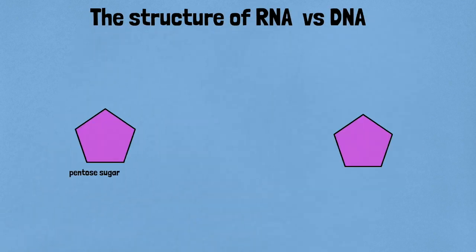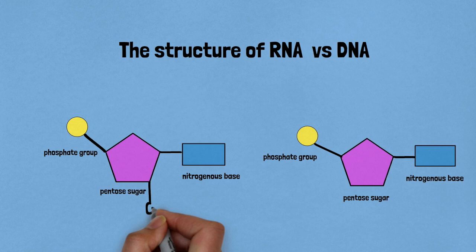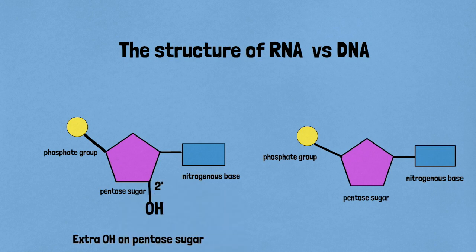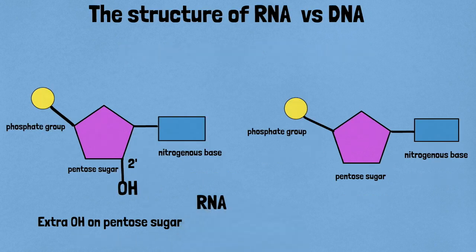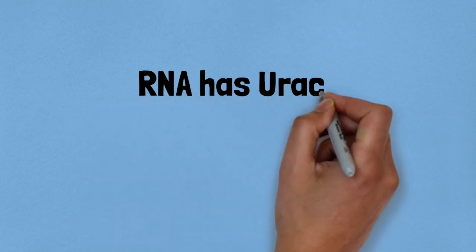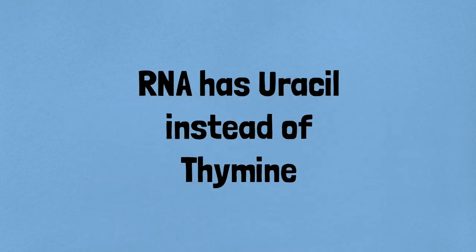The structure of RNA has one minor yet very significant difference from DNA: in RNA, every nucleotide residue has an additional OH group present at the second position of the ribose. As we know, uracil is present in RNA instead of thymine.